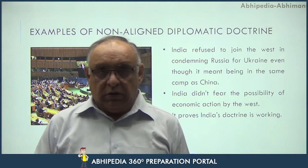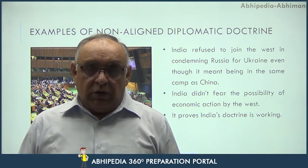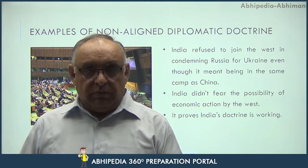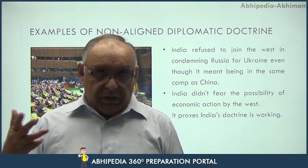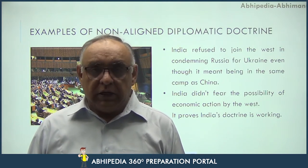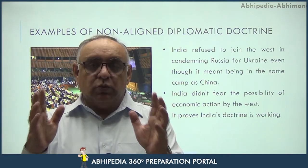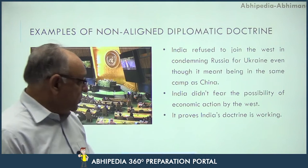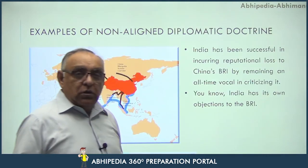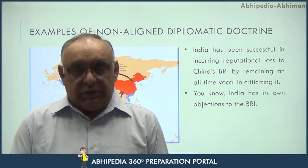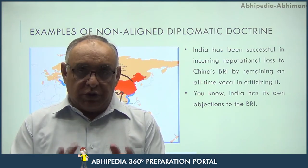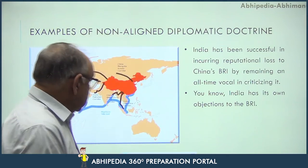Usually the West's modus operandi is that if a country doesn't follow their line, they impose economic sanctions and restrictions — as has been done with Iran and Russia. But India maintained its independent stance regardless. India didn't fear the possibility of economic actions by the West. It proves India's doctrine is working. India took an independent stance openly, yet India's relations with the West remain good. This itself proves that India's Modi Doctrine is working and bearing fruit.